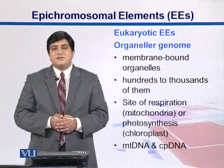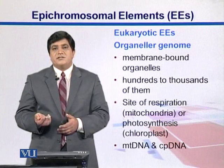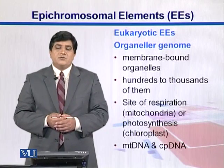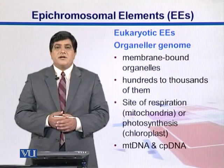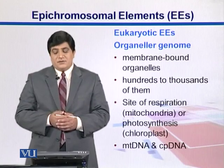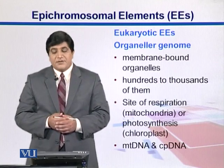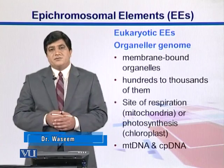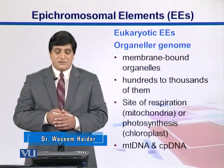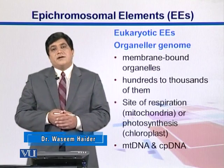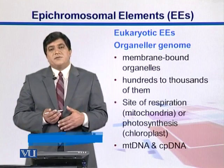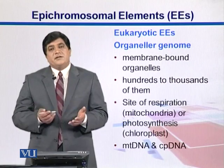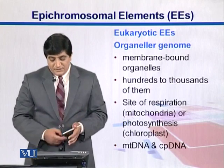Eukaryotes have extra organelles that also contain the genome or DNA, which we call organellar DNA. Examples are chloroplast DNA in plants and mitochondrial DNA in both plants and animals. These are membrane-bound organelles and may be present in hundreds to thousands of copies — so there are multiple copies of these genomes. Mitochondria is the site for respiration, whereas the chloroplast is the site for photosynthesis, and their DNAs can be labeled as mtDNA or cpDNA.